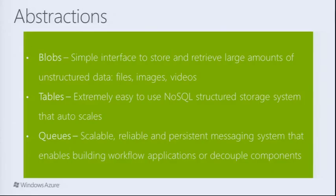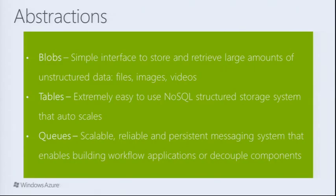We have various abstractions provided on the fundamental storage system. Blobs is a highly scalable unstructured data store — think of it as a simple interface to store files, images, and videos, and you can share these. Tables is a NoSQL structured storage system which auto scales and is extremely easy to use. Queues is a scalable, reliable, and persistent asynchronous messaging system that enables you to build workflow applications and decouple components that need to communicate in a distributed system.